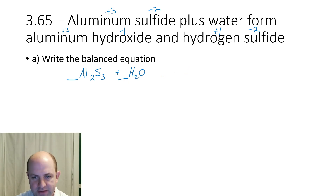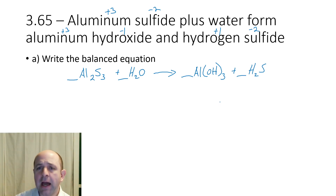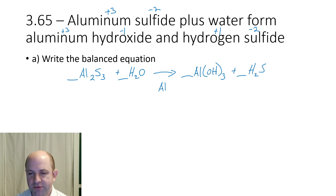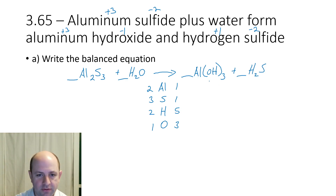Now we go through the formulas: aluminum sulfide is Al2S3. Plus water, H2O — I'll leave blanks in front so I can balance. They form aluminum hydroxide, Al(OH)3, and hydrogen sulfide, H2S. I write every element under the arrow as my separating line: aluminum, sulfur, hydrogen, oxygen. On the left: 2 Al, 3 S, 2 H, 1 O. On the right: 1 Al, 1 S, 5 H total, and 3 O. Everything's off, so we need to balance.